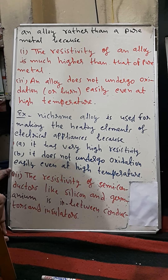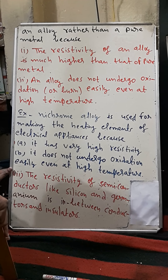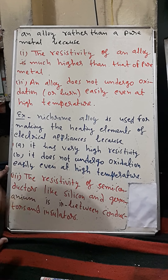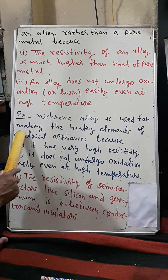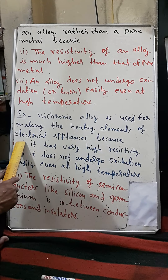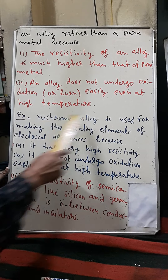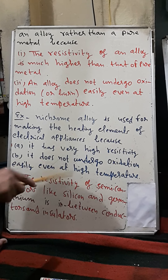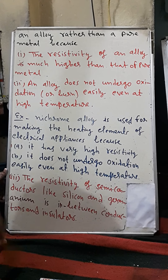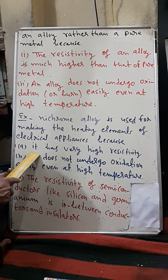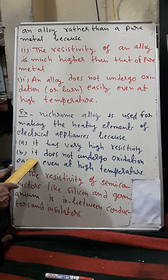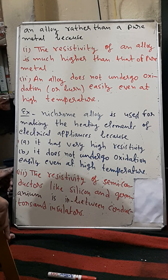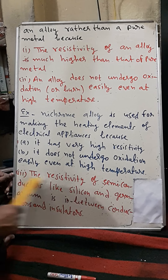For example, nichrome alloy is used for making the heating elements of electrical appliances. We mostly use nichrome in heating elements. The reasons are: (a) it has very high resistivity, and (b) it does not undergo oxidation easily — even at high temperatures, its oxidation does not occur.